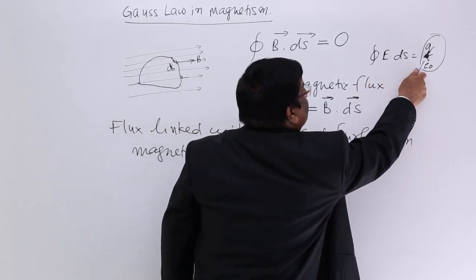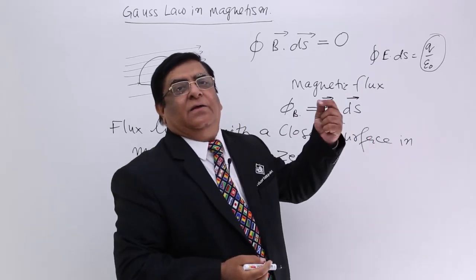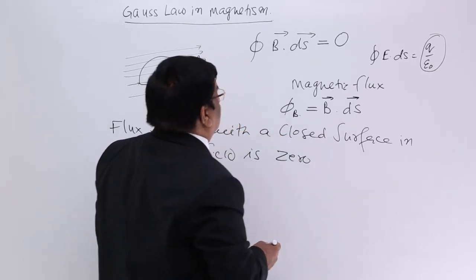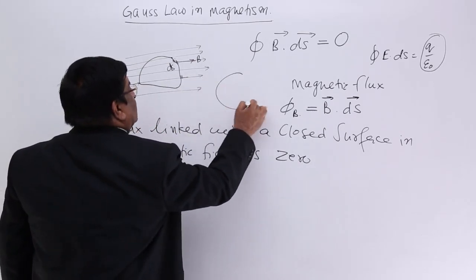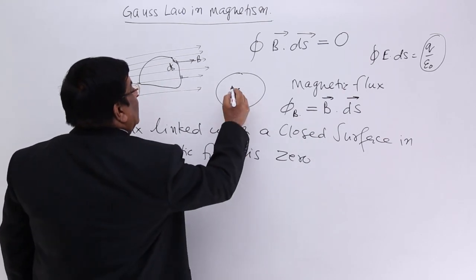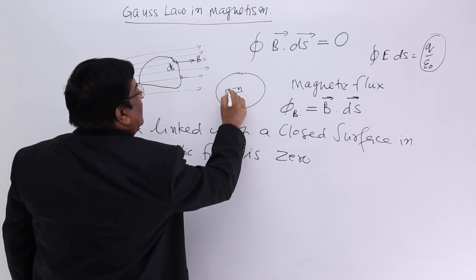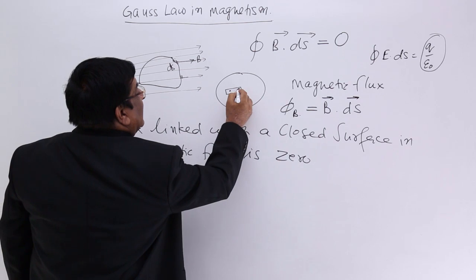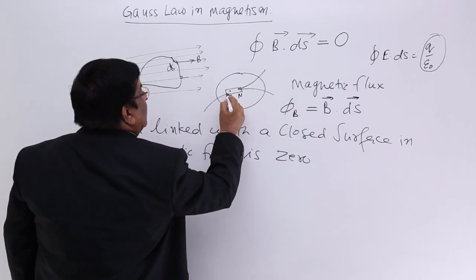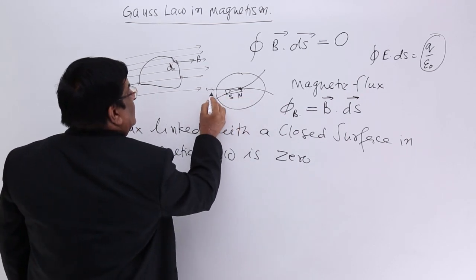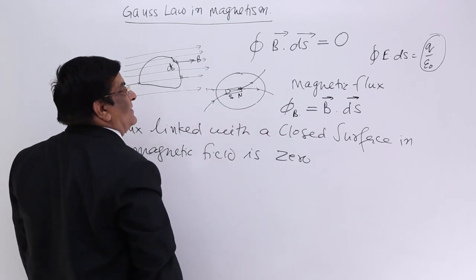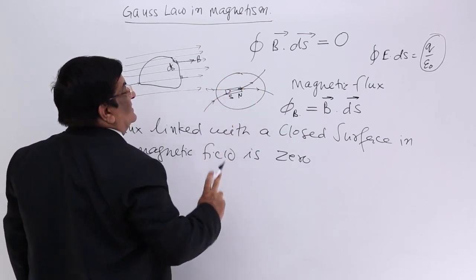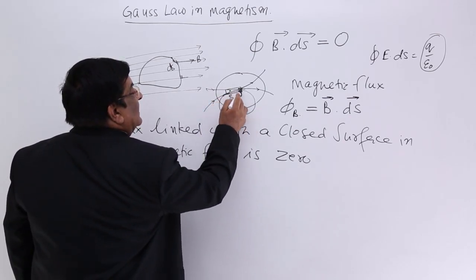Charge is responsible for creating electric field. But who is responsible for creating magnetic field? The answer is north pole and south pole in material magnetism. If I take a Gaussian surface and put a north pole inside, I must put a magnet — and north pole and south pole cannot be separated. So a south pole is also present. From the north pole, magnetic field lines go out; from the south pole they enter. The number of lines going out equals the number of lines entering, so the total number of lines linked with the closed surface is 0.